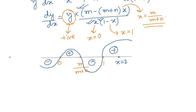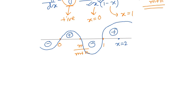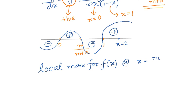Once we have the sign scheme, the local maxima analysis is simple. At x = m/(m+n), the derivative changes from positive to negative, meaning the function was increasing before this point and decreasing after. Therefore, the function has a local maximum at x = m/(m+n).